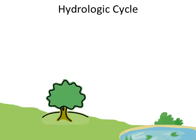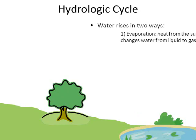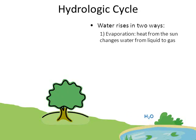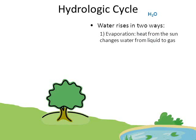Let's look at the stages of the water cycle. Water rises into the air in two ways. The most obvious is evaporation — heat from the sun causes water vapor to rise into the air. Liquid water from a pond turns into a vapor and rises into the air.